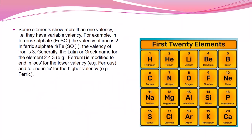Some elements show more than one valency. For example, iron (Fe): in ferrous form it has a valency of two, and in ferric form it has a valency of three. Ferrous sulfate is FeSO4 and ferric sulfate differs accordingly. There are twenty elements with their atomic numbers that were known from the first twenty elements in history.